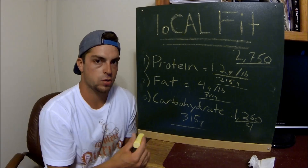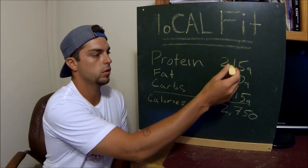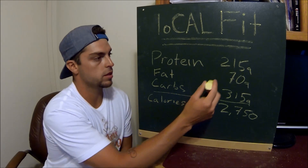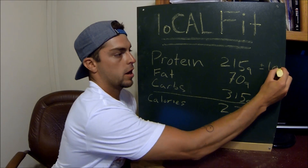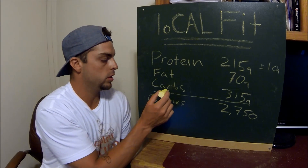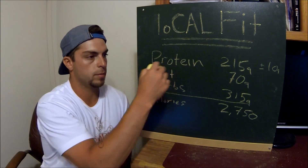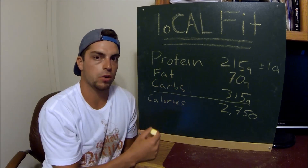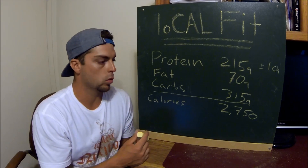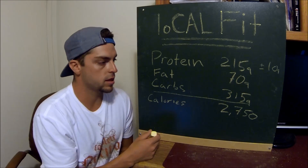These macros will stay relatively the same but as we progress in our diet, our carbohydrates are going to drop. For week one, we want to hit these numbers within about 10 grams each day. Where you really want to pay attention is your carbohydrates — by keeping them accurate every day this week, we're going to minimize water weight fluctuation and water retention for our morning weigh-ins.